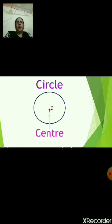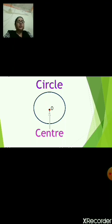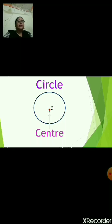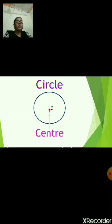Now, the first part we are going to learn about is center. This shape is round, right? Can you see that red point in the middle of the circle? That red point is called the center of the circle. The name given to the center is O. So, O is called the center of the circle.